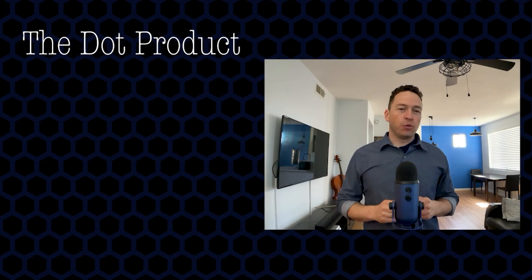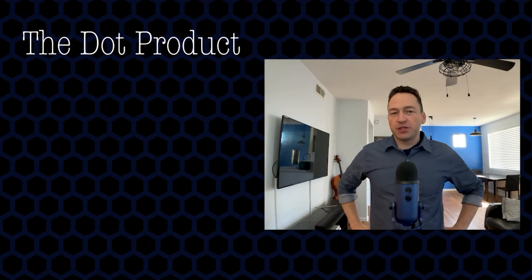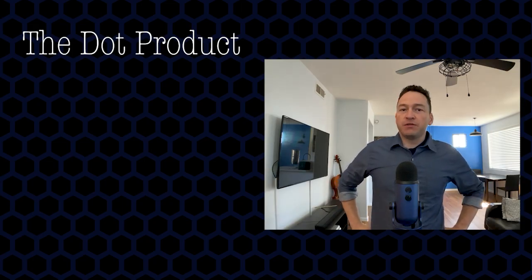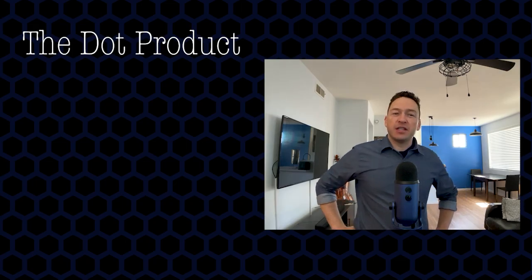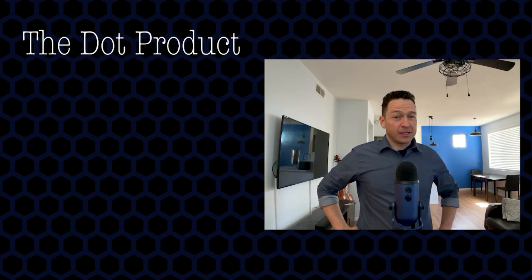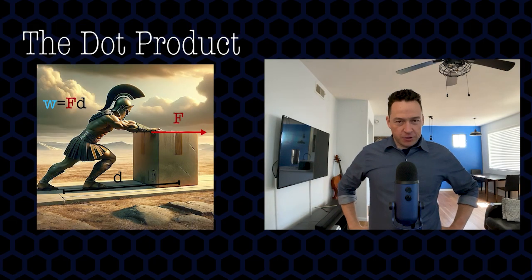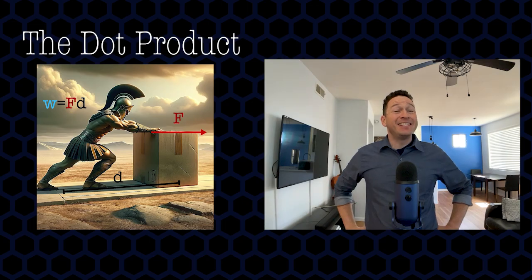The dot product was created as a mathematical operation for understanding the physical process of work and other similar concepts. What we're going to do in this video is understand the dot product and cross product by understanding the observations in physics that they were derived from. When a force pushes on an object, it will do work equal to that force multiplied by the distance over which that force was exerted.